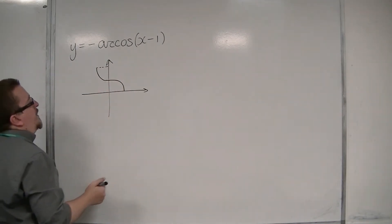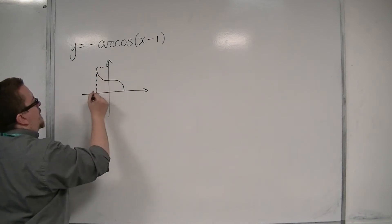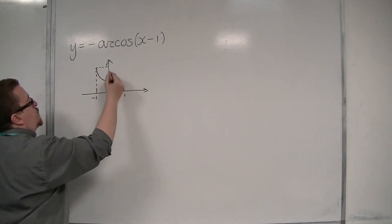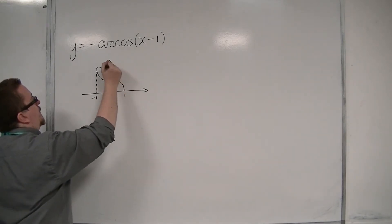Okay, so it has a domain between minus 1 and 1, and it has a range between 0, there's pi over 2, and that's pi.